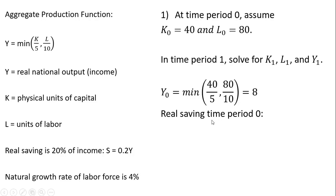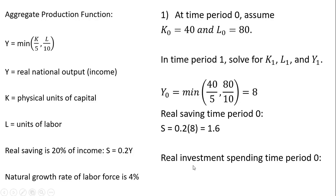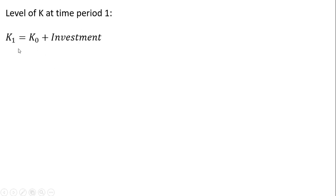Now we're going to calculate saving. Saving is going to be 20 percent of income or output, so 0.2 times 8 is 1.6. Real investment spending will then be 1.6, since investment equals saving. The level of capital at time period one — K subscript one — will be the level of capital in the earlier period plus the level of investment spending that adds to our capital stock. So 40 plus 1.6 gives us 41.6.